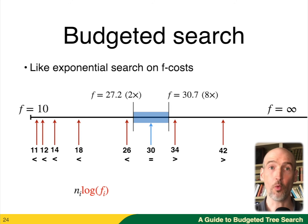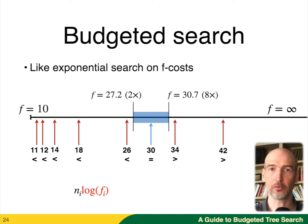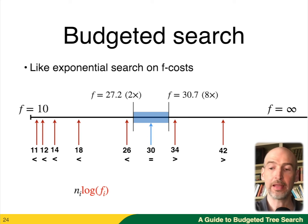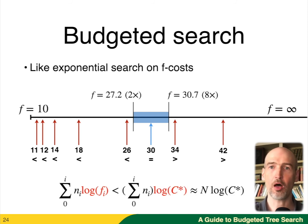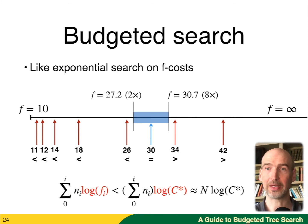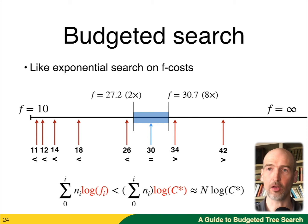The running time for one iteration is that the most we're going to pay is the maximum bound — in this case 800 nodes, that would be N(i). And then the F cost I'm trying to find takes at most log of that steps. Overall, when finding the solution across all iterations i, the final F cost is bounded by C*, the optimal cost. If we sum up the N(i)'s, because they're growing exponentially, asymptotically they'll equal N. So the running time of this algorithm in the worst case is N log C*.